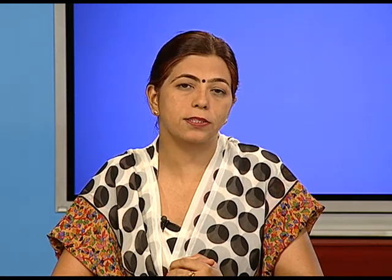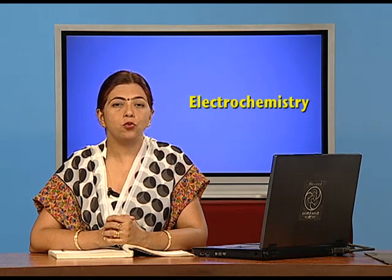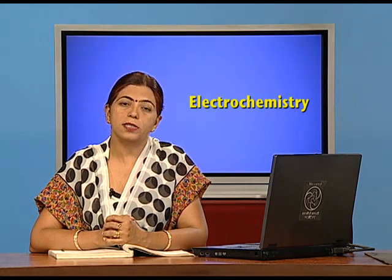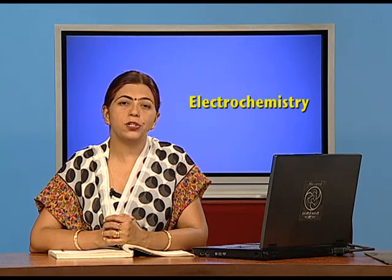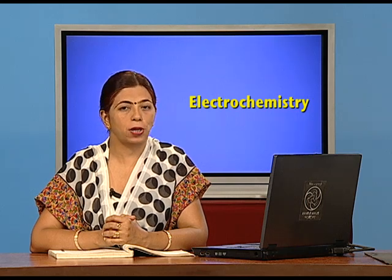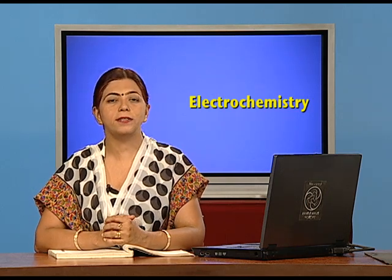We use a dry cell in a transistor or torch, and a small mercury cell in wrist watches or hearing aids. A battery is a combination of two or more galvanic cells in series. Commercial cells are classified as primary cells and secondary cells. There is also a fuel cell category that we will study later.